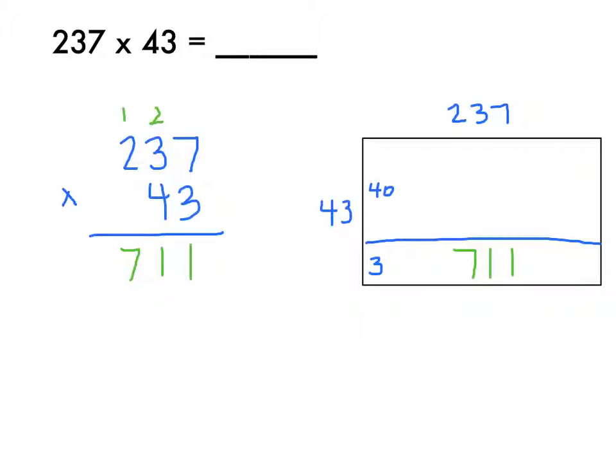Now I'm going to move over to 237 times 40. And because I'm moving from the 3 to the 4, I need to account for that by putting in a placeholder to show that I'm moving over to the tens place.